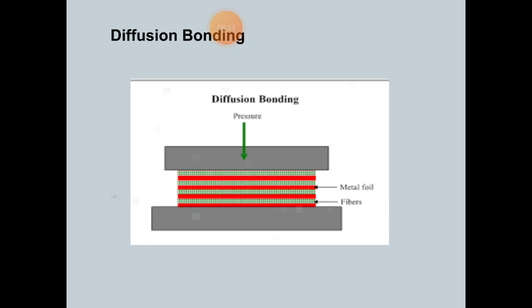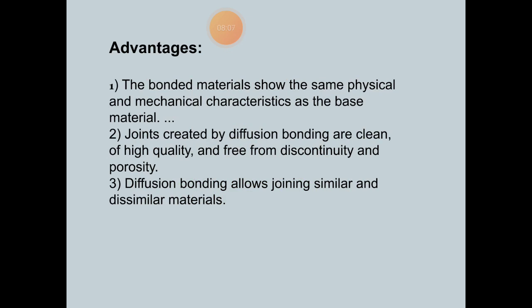There are various advantages of this process. First is that the bonded materials show the same physical and mechanical characteristics as the base material. The joints created by diffusion bonding are clean and high quality and free from discontinuity and porosity. Diffusion bonding allows joining similar and dissimilar materials. Then the running costs are rather low and process is easy to approach. Then plastic deformation can be reduced under diffusion. Then in this process due to a good dimension tolerance, Diffusion bonding is used to produce high precision components and complex shape.